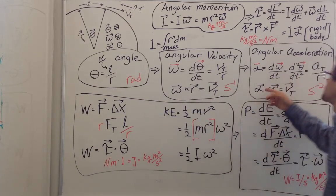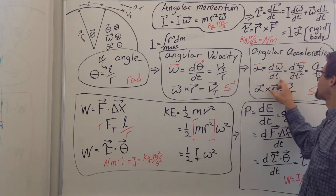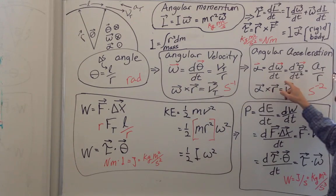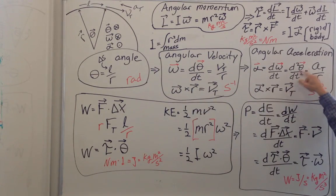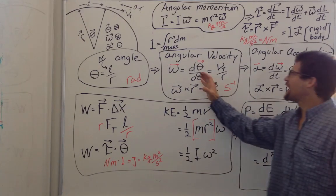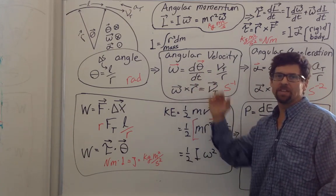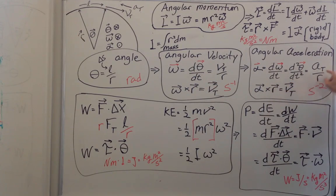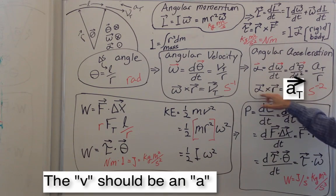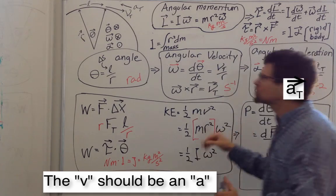What is angular acceleration? Angular acceleration is the time derivative of omega, and therefore the second time derivative of theta, or how fast your rotational velocity is changing. If we substitute in omega, we find that this equals the tangential acceleration divided by r, so the units are per second squared. The direction is determined by this cross product.